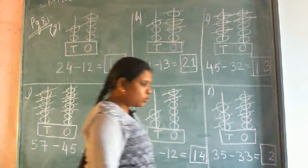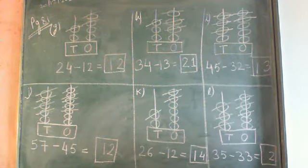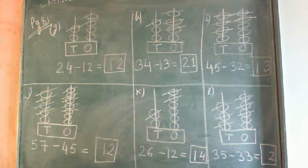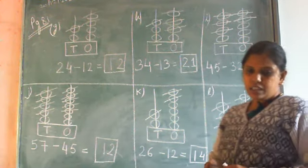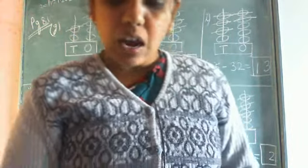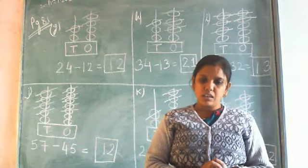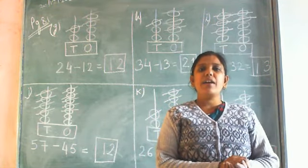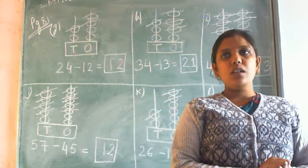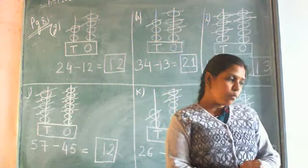Very good students, those who have done correctly — clap for yourself. Very good to those who are trying at home. All the questions given in the book are now done. I hope all of you have understood very nicely how we do addition and subtraction using the abacus. Now I am giving you some homework questions — copy the homework questions from the board.